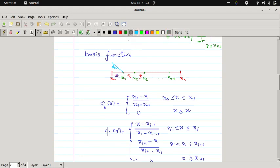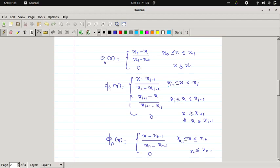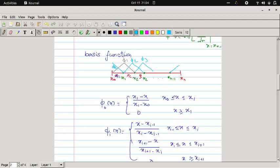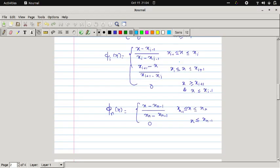This is your phi_1. Similarly, this is your phi_2. You go with phi_3 and everything. But the final step is phi_n, so these are the basis functions we are defining here.